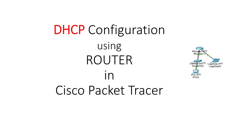DHCP is basically assigning IPs so that the workstations within the network can communicate. We have two ways of assigning IPs: either statically, where you configure any machine with a static IP that remains the same, or dynamically, where the DHCP server assigns IPs at runtime when any workstation becomes part of the network. This video talks about how to configure DHCP on the router. In another video, you can see how to configure a separate DHCP server.